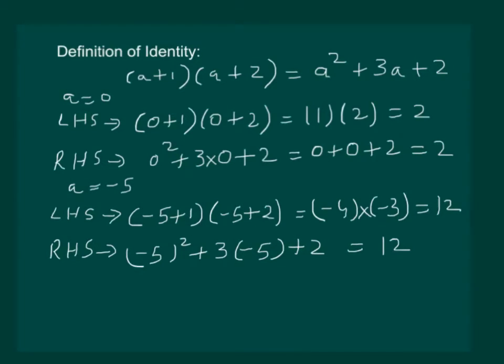We can check the same with any other number of our choice and find that left hand side is equal to right hand side. And so we can say that such an equality which is true for every value of the variable in it is called an identity.